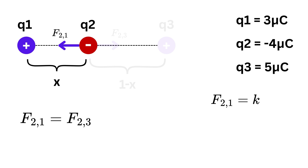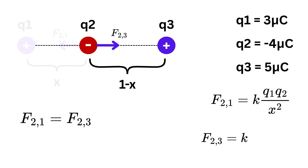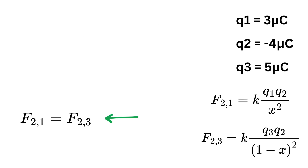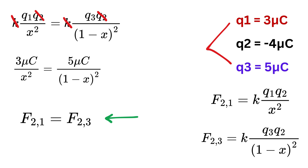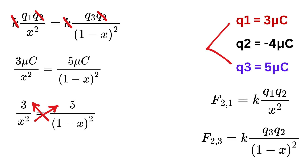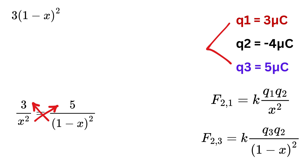We write the magnitude of F(2,1) as k × |q1| × |q2| / x², and F(2,3) as k × |q3| × |q2| / (1 − x)². Setting them equal and cancelling k and q2 from both sides, substituting q1 = 3 and q3 = 5, we get: 3/x² = 5/(1 − x)². Cross-multiplying gives 3(1 − x)² = 5x², which expands to 3 − 6x + 3x² = 5x².